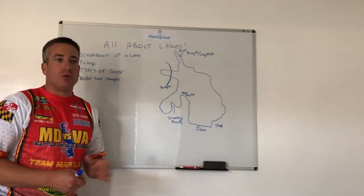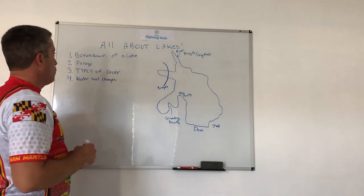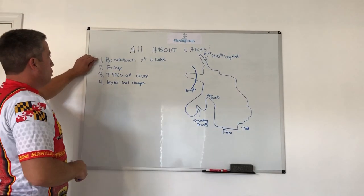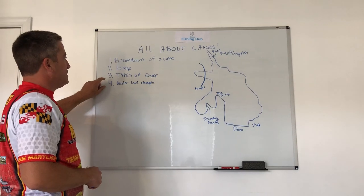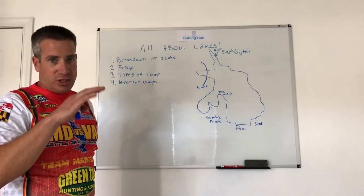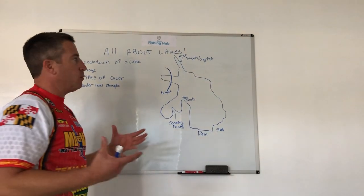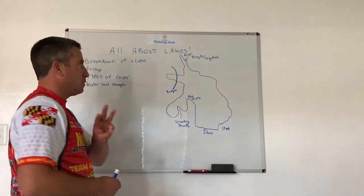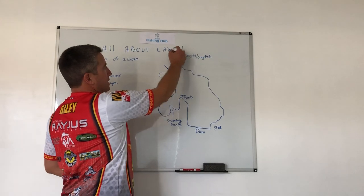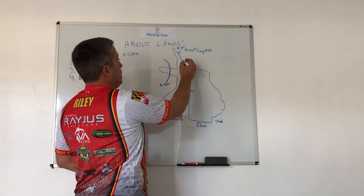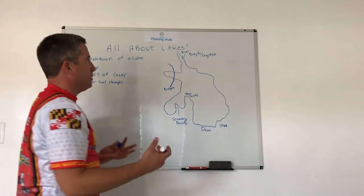Today's lesson is all about lakes. We're going to break a lake down into different sections — we'll look at the forage, the types of cover you can have in a lake, and how to adapt to water level changes, whether that be really high water or really low water. The first thing I want to do is break the lake into three different sections. Lakes always have a river system that feeds them, and each section typically fishes a little bit differently.